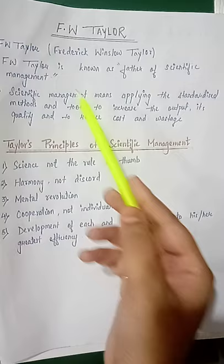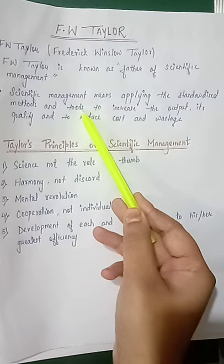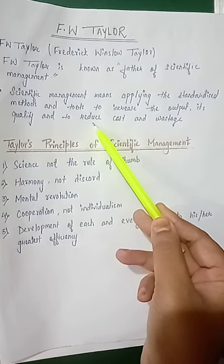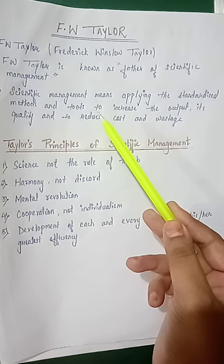Scientific management means applying standardized methods and tools to increase output and its quality, and to reduce cost and wastage. These standardized methods and tools include fatigue study, motion study, and many other studies and techniques which we will learn further.